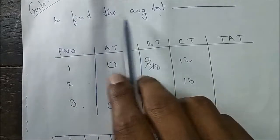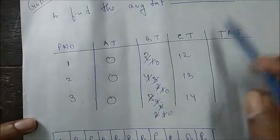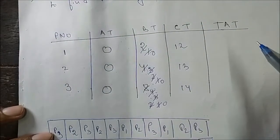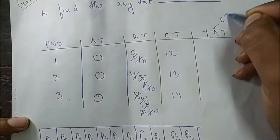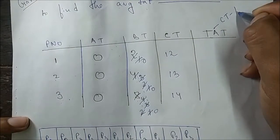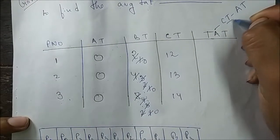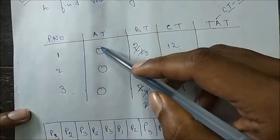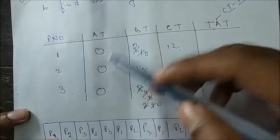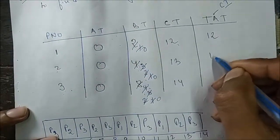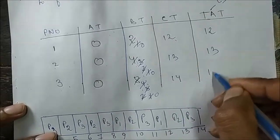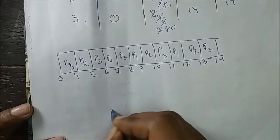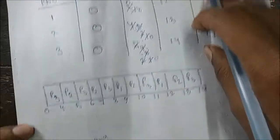They are asking for the average turnaround time. The formula for turnaround time is: completion time minus arrival time. Since all processes have arrival time 0, the turnaround times are: P1 = 12 − 0 = 12, P2 = 13 − 0 = 13, P3 = 14 − 0 = 14.